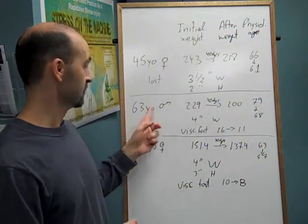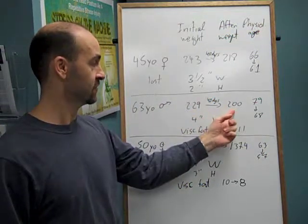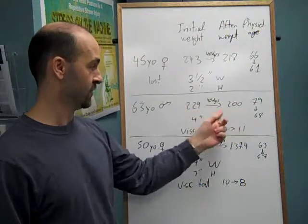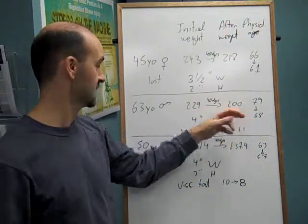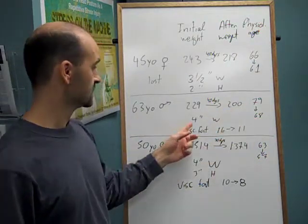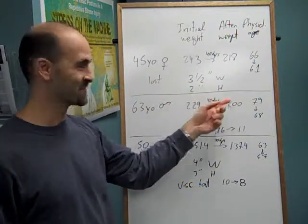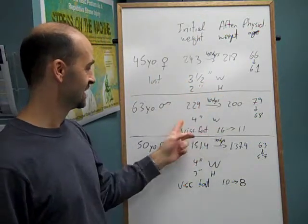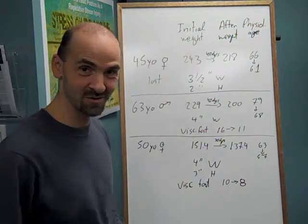We had a 63-year-old male who was 229 pounds at the start, went down to 200 pounds over the 40-day period. He was 79 years old in his physiological age, even though he was 63, and he came down to 68. She had lost three and a half inches on her waist and about two inches on her hips. He lost about four inches around his waist, and obviously all these people are struggling to get new clothing now.